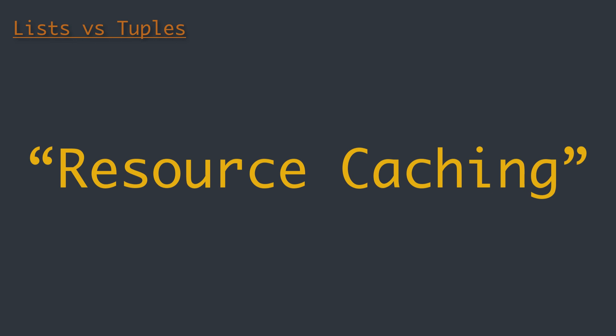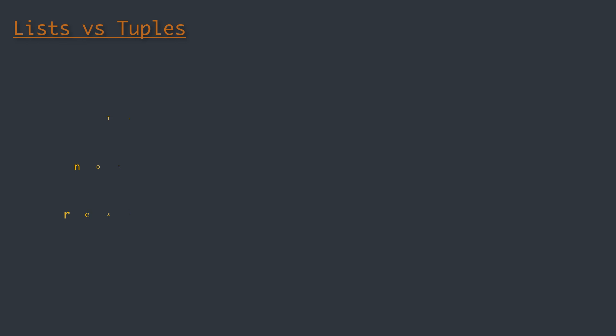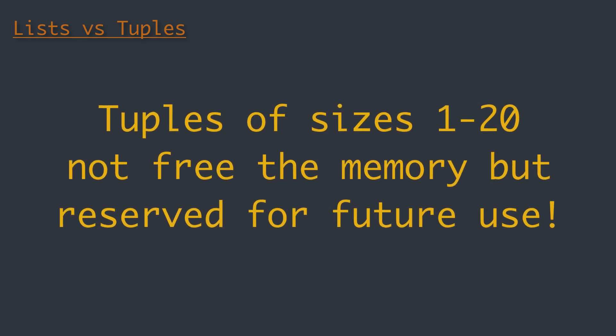Another benefit of the static nature of tuples is something Python does in the background: resource caching. Python is garbage collected, which means when a variable isn't used anymore, Python frees the memory used by that variable, giving it back to the operating system. However, for tuples of sizes 1 to 20, when they are no longer in use, the space isn't immediately given back to the system — rather, it's saved for future use. This means that when a new tuple of that size is needed, we don't need to communicate with the operating system to find a region in memory, since we already have a reserve of free memory. Tuples can therefore be created easily and quickly, avoiding costly communication with the operating system.